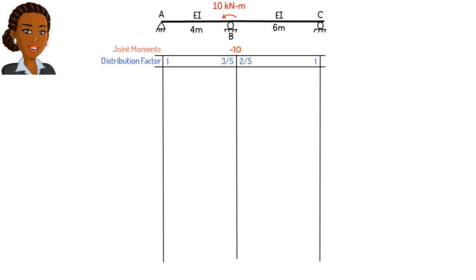We start by drawing our moment distribution table like this. We write the distribution factors in the first row of the table. Since there is only one member connected to the pin support at A, the distribution factor at the joint equals 1. This means any bending moment that appears at A is going to be distributed entirely to the left end of member AB. This is also true for joint C. Any bending moment that appears at C goes to the right end of member BC. At joint B, we write 3 over 5 in the left column and 2 over 5 in the right column. These are the distribution factors we computed a minute ago.